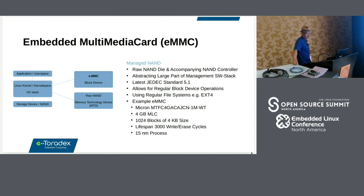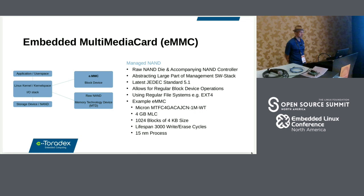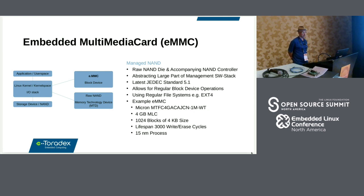eMMC is basically also called Managed NAND — a raw NAND die with an accompanying NAND controller that abstracts away all those details. You can use regular block operations and regular file systems like ext4 without worrying about those internals. The latest JEDEC standard version is 5.1. The example eMMC I'll cover is this Micron part: 4 GB in size, 1024 blocks, an average lifespan of 3,000 write-erase cycles, produced in a 15-nanometer process — pretty standard for embedded systems.